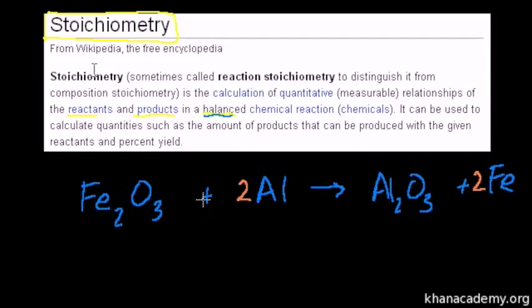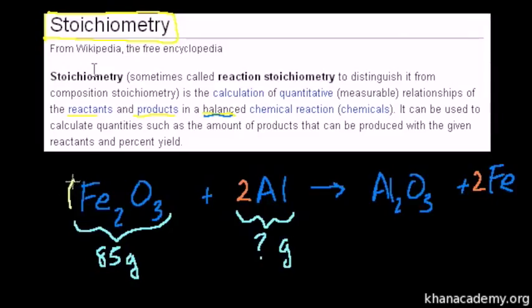We'll actually do those exact two types of problems in this video. So let's say that we were given 85 grams of the iron 3 oxide. So my question to you is how many grams of aluminum do we need? You look at the equation, you immediately see the mole ratio. So for every mole of iron 3 oxide, for every one atom we use, we need two aluminums, right?